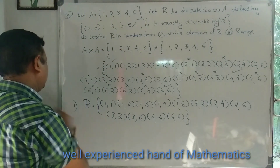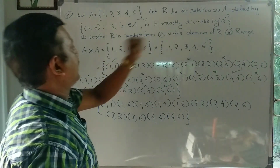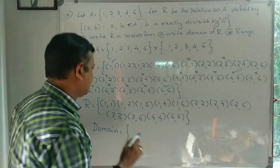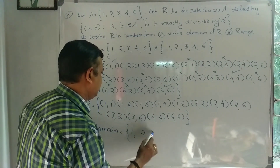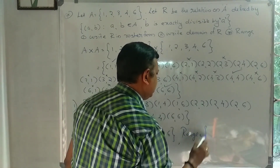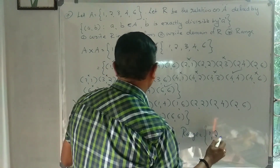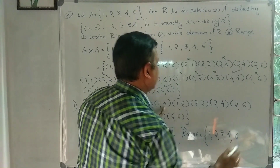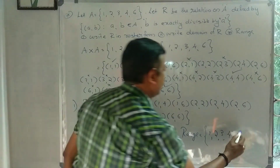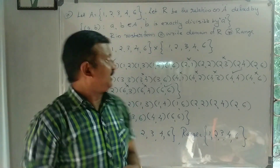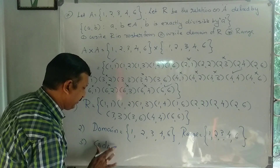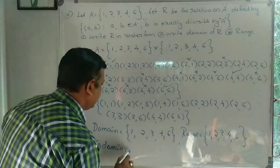So R in roster form is established. The domain consists of the x-coordinates: {1, 2, 3, 4, 6}. The range consists of the y-coordinates that appear. The codomain is all elements of A, since R is a relation on A × A, so codomain = {1, 2, 3, 4, 6}.